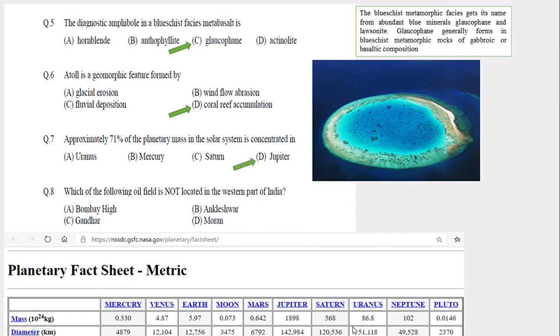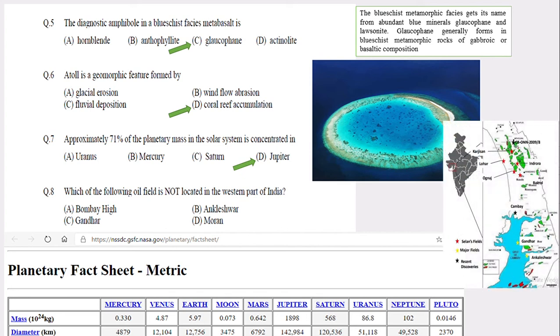The eighth question: which is NOT in the western part of India? If we see the western part, Bombay High is in the western part, Ankaleshwar is in the western part, and Gandhar is in the western part. So automatically the fourth one, the odd one, is not in the western part. The answer is Moran, option D.